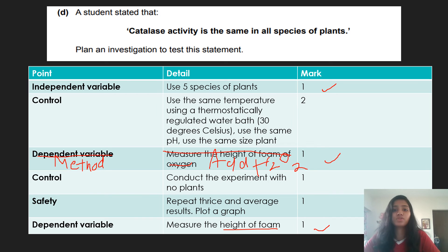Now the height of foam is also affected by other factors. Now what is this? Temperature, pH, the size of plants, the age of plants. So then you state your control. So you can use the same temperature using a thermostatically regulated water bath. Or you can use the same pH. You can use the same size of plants. You get two marks.